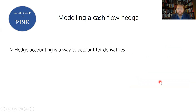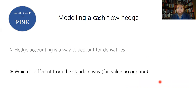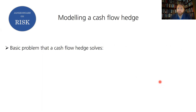To recap quickly, this has been covered in other tutorials. Hedge accounting is a way to account for derivatives — financial derivatives — which is different from fair value accounting, which is how they normally enter the books. We need to understand the basic problem that is being addressed by a cash flow hedge, which is the focus of this particular video.